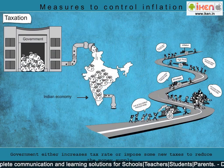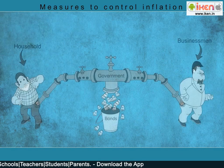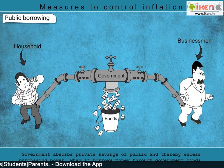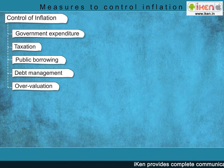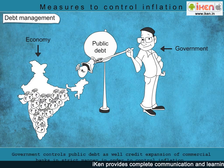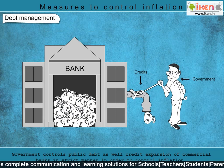Public Borrowing: The government borrows money from households and businessmen by way of bonds. Public borrowing absorbs excess purchasing power from the public by mobilizing private savings. Debt Management: The government can control public debt in a strict manner in order to control excess money supply in the economy. The government also controls the credit expansion of commercial banks.